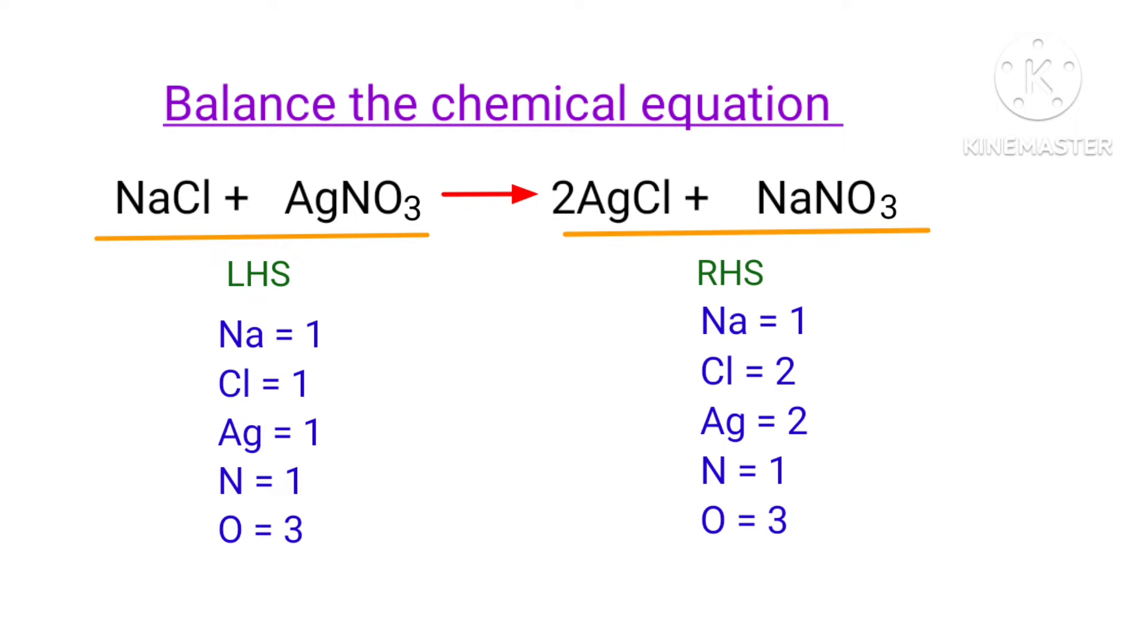The number of atoms are not balanced on both sides. To balance the chemical equation, we need to make use of coefficients. A coefficient is a number that we place in front of a chemical formula.